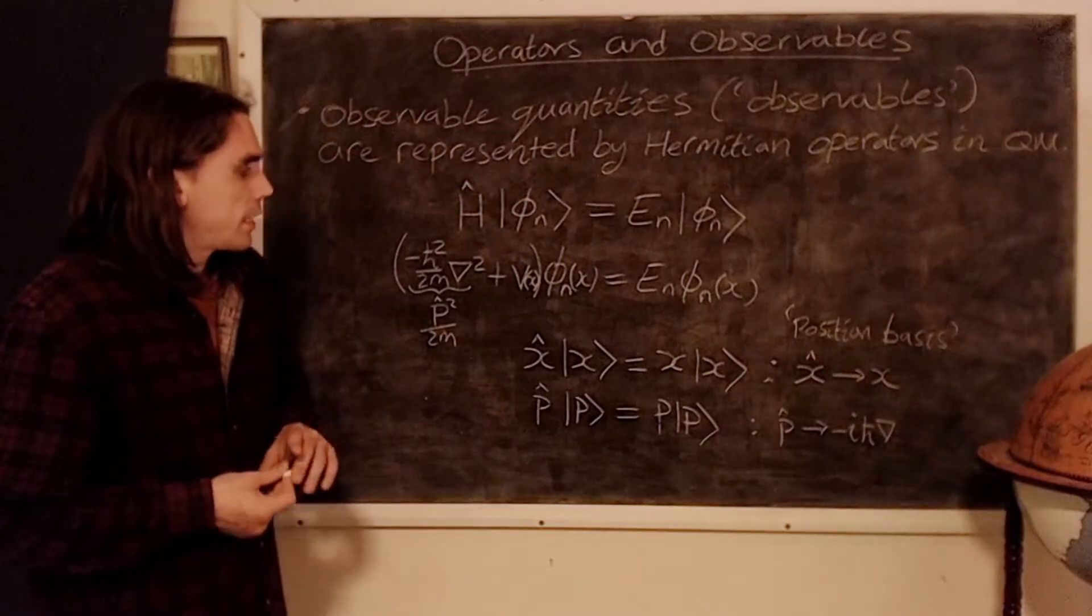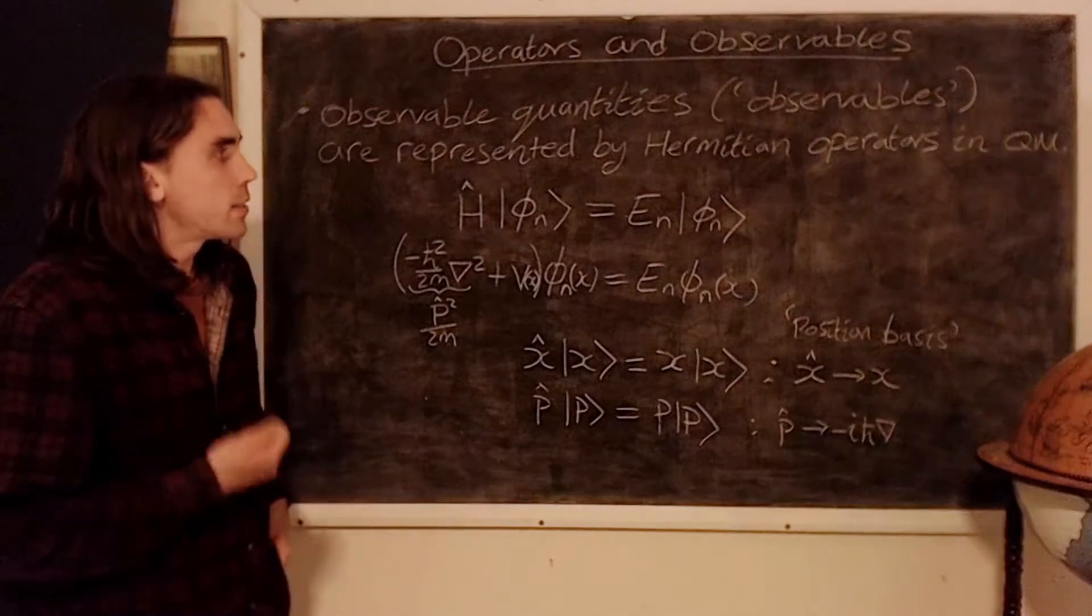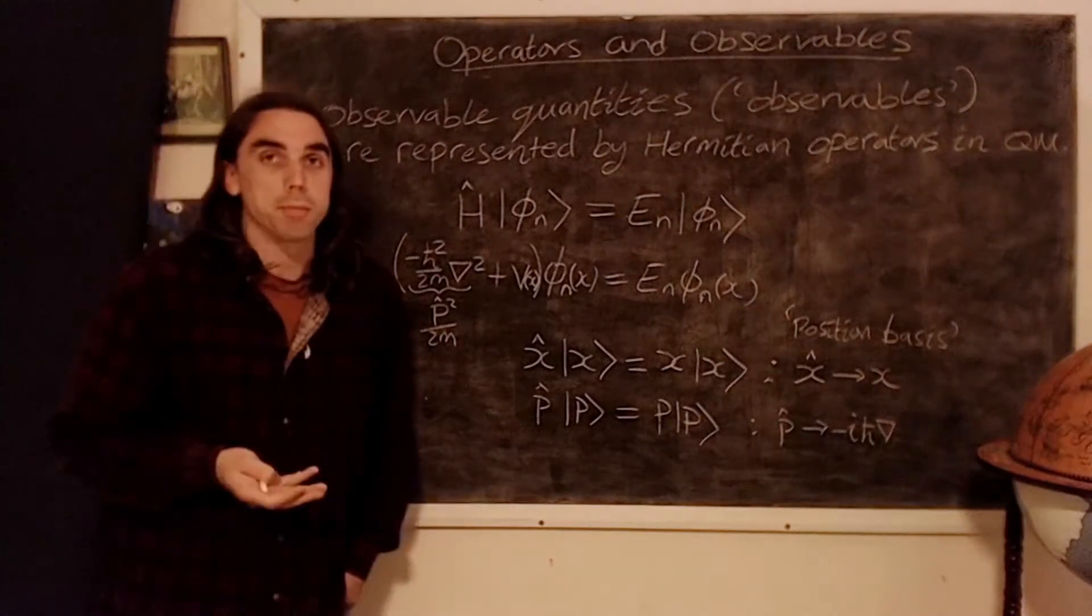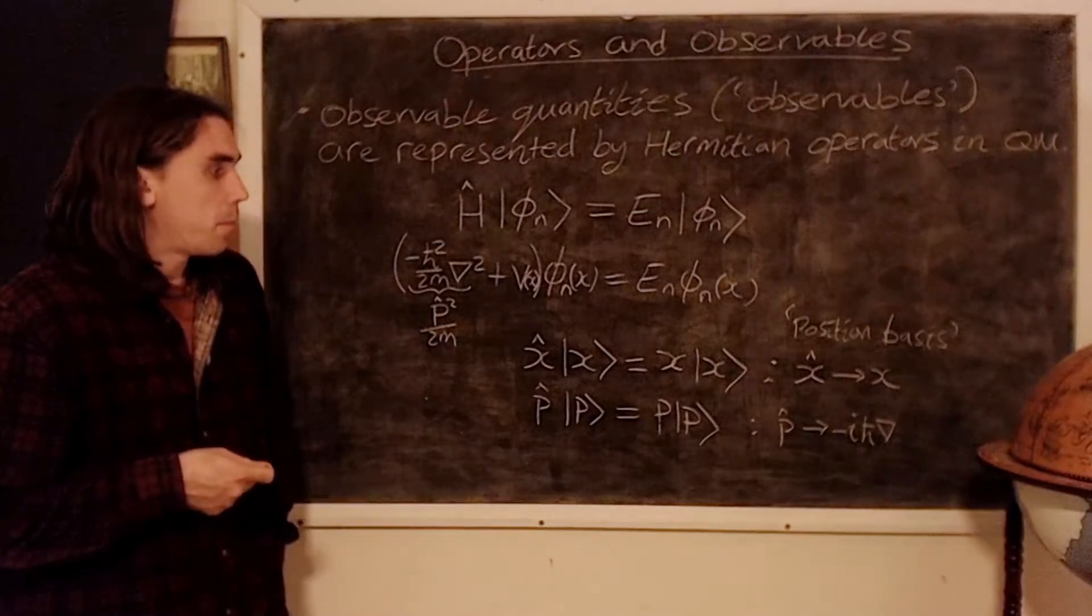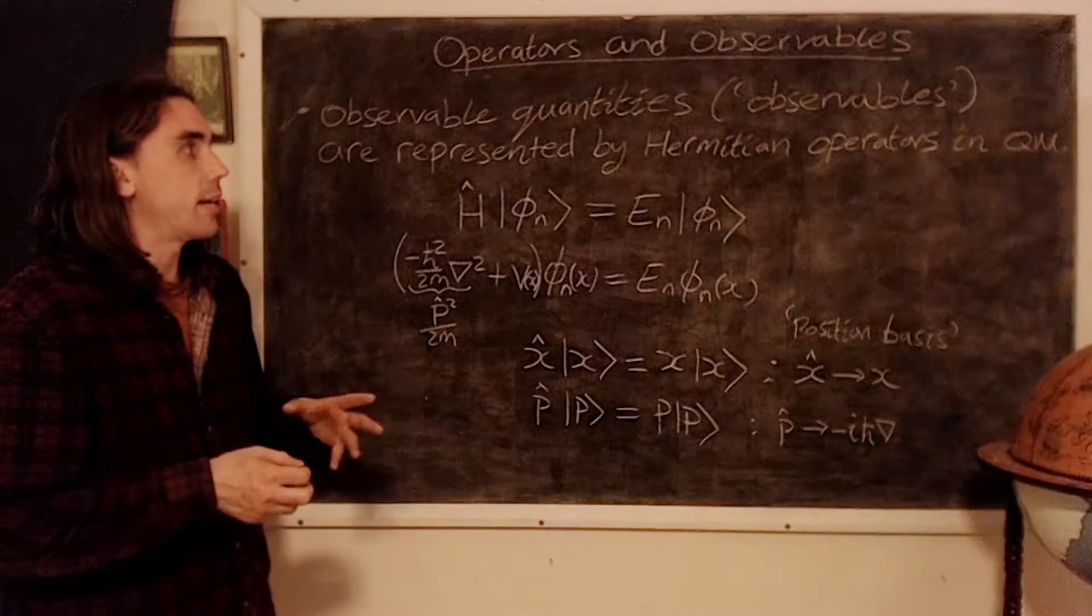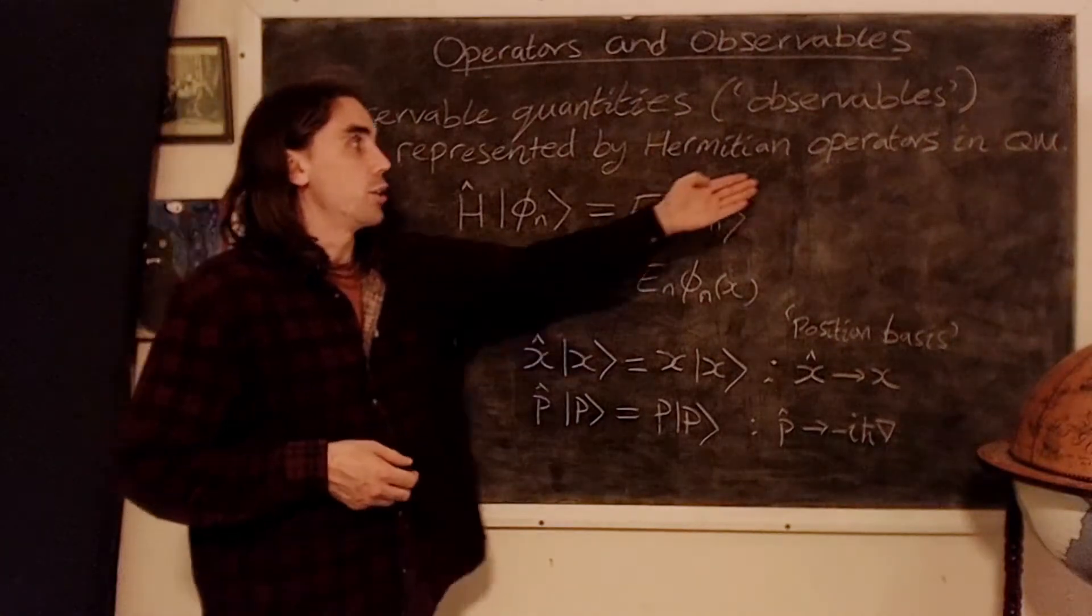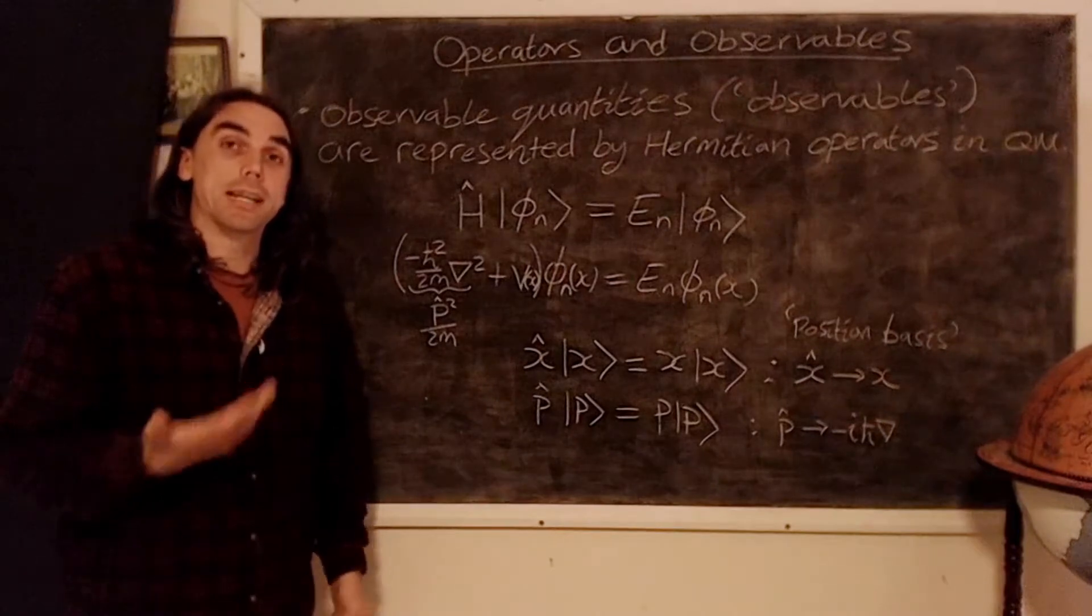For now, let's work entirely with the operators. So when Heisenberg wrote down what's called matrix mechanics, which is what we're really studying here, he chose to use matrices and their infinite dimensional generalizations, which are operators, for the following reason, that matrices need not commute.